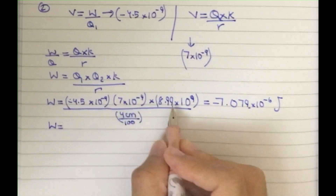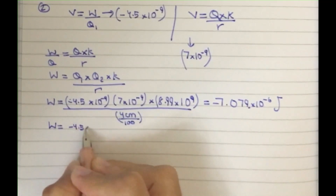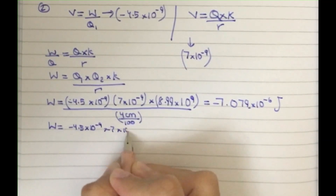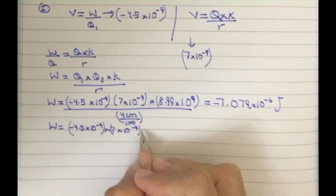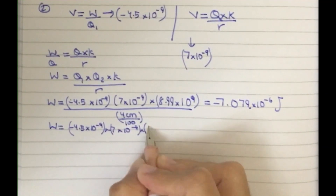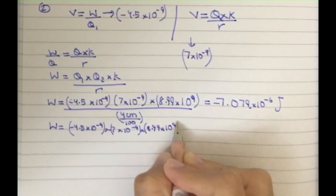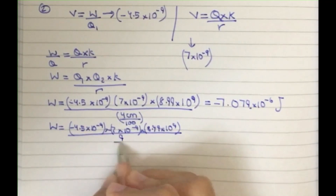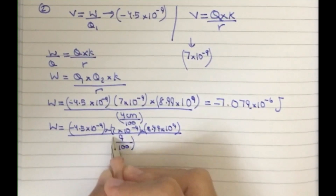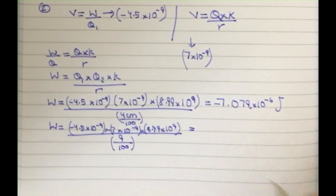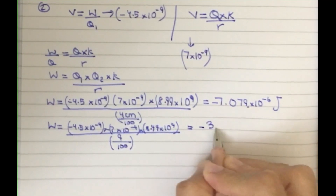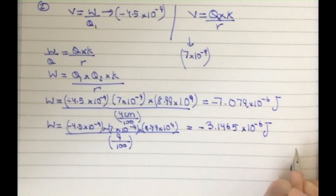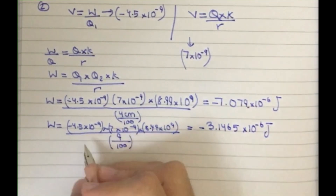For the 9 centimeter case: W equals negative 4.5 times 10 to the power minus 9, times 7 times 10 to the power minus 9, times 8.99 times 10 to the power 9, divided by 9 centimeters — making sure to divide by 100 to convert to meters. This gives a value of negative 3.1465 times 10 raised to power minus 6 joules.